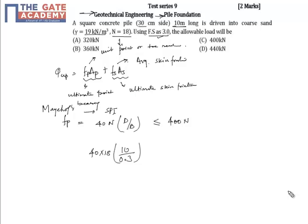Its value is 24,000 kN per meter square. Again, 400N is equal to 7,200 kN per meter square, so we will take the value minimum 7,200 kN per meter square.